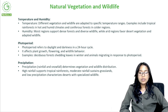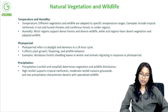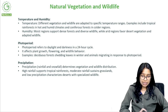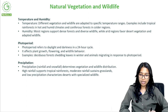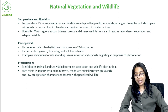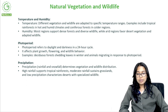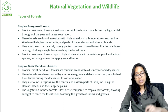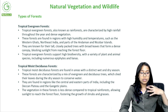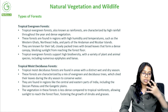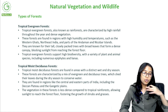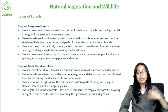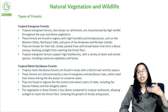Precipitation — rainfall and snowfall — determines vegetation and wildlife distribution. High rainfall supports tropical forests, moderate rainfall sustains grasslands, and low precipitation characterizes deserts with specialized wildlife. The wildlife becomes adapted to the region where it is living, adapting itself over the course of years to be able to inhabit that particular environment.